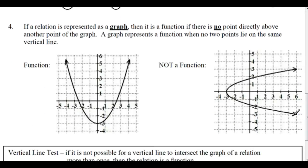If a relation is represented as a graph, then it's a function if there's no point directly above another point on the graph. A graph represents a function when no two points lie on the same vertical line,